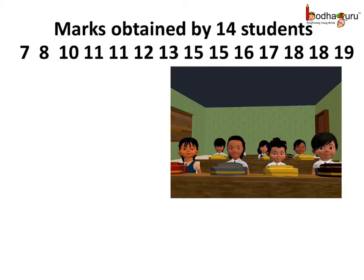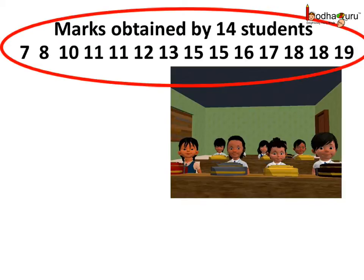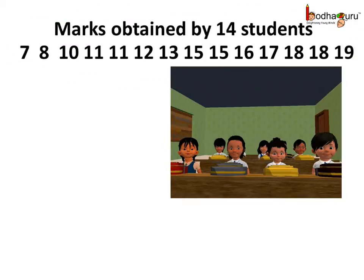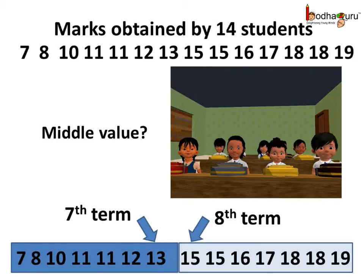Say you are told to divide students into two groups based on their math score. Here 14 students are there, and the marks obtained by them are: 7, 8, 10, 11, 11, 12, 13, 15, 15, 16, 17, 18, 18, and 19. These students have been arranged in ascending order of math score.